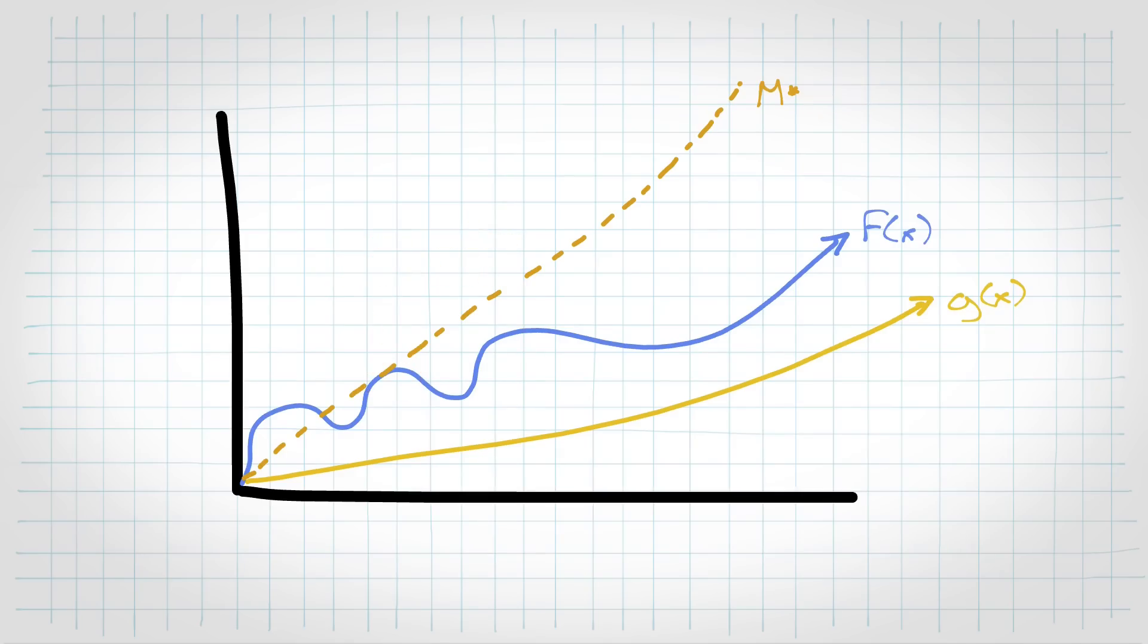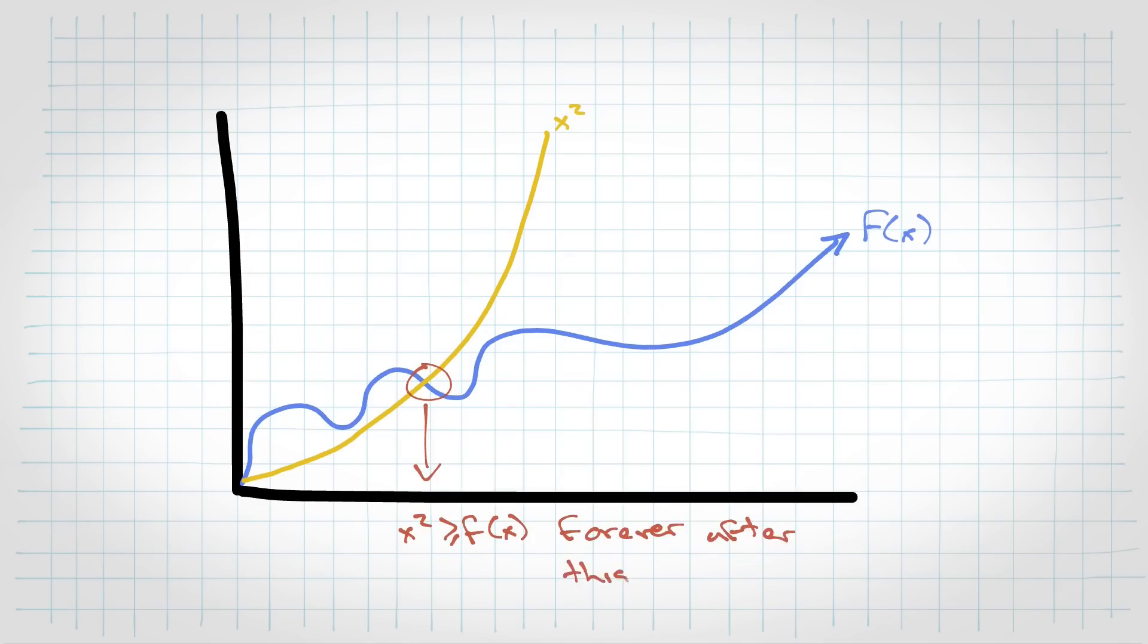So if we backtrack, here's f at x again. But this time, let's say that g at x is actually the function x squared. So you get this curve. Since f at x is less than x squared around this point, and after that it stays under there forever, f at x is order x squared.